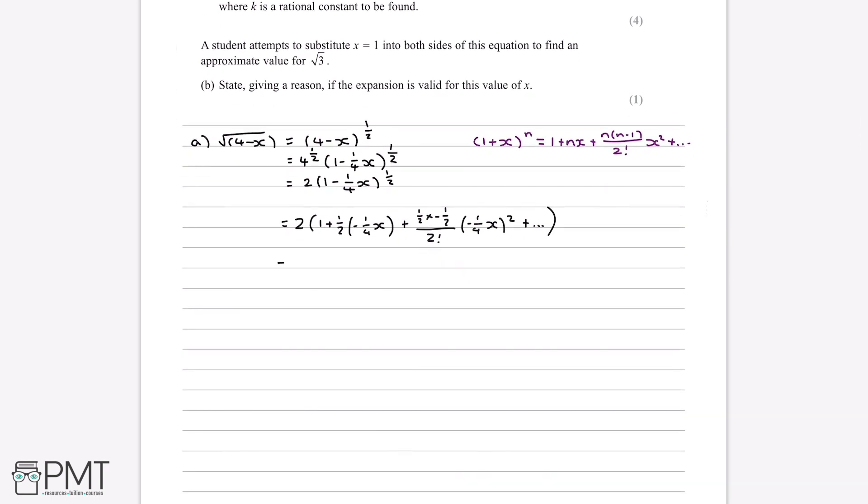And now if we simplify this out, we get 2 bracket, 1 minus an eighth x, minus 1 over 128 x squared, plus etc, close bracket.